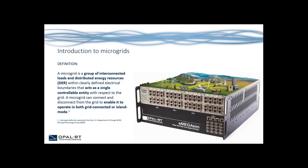First, an introduction to microgrids. The definition of the United States Department of Energy microgrid exchange group goes like this: a microgrid is a group of interconnected loads and distributed energy resources within clearly defined electrical boundaries that acts as a single controllable entity with respect to the grid. A microgrid can connect and disconnect from the grid to enable it to operate in both grid-connected and island mode.